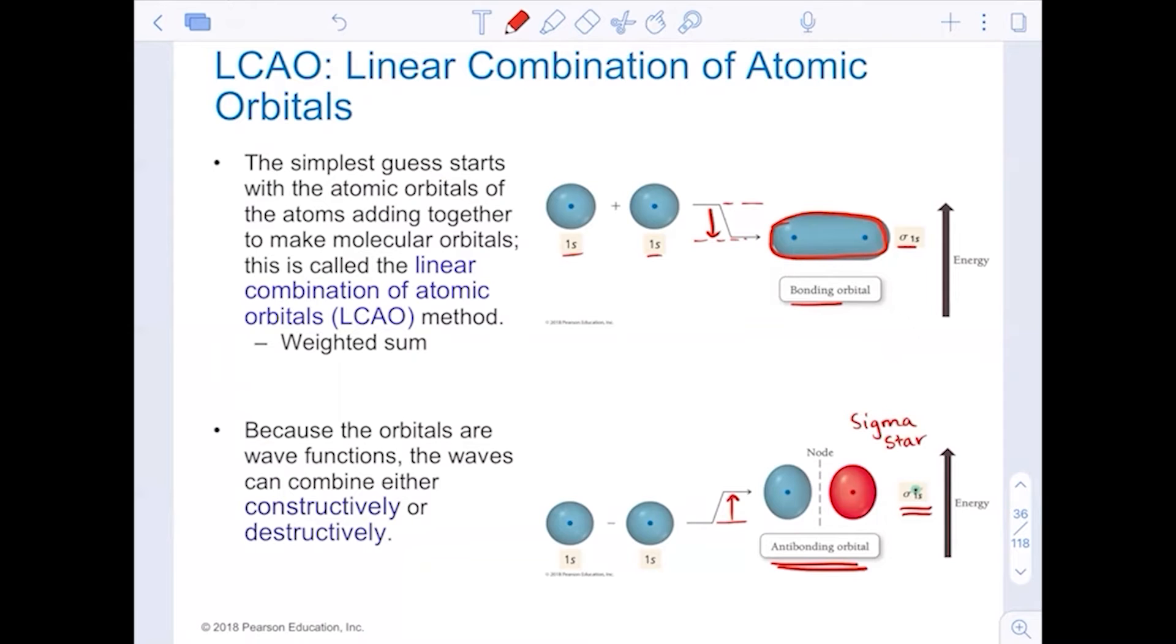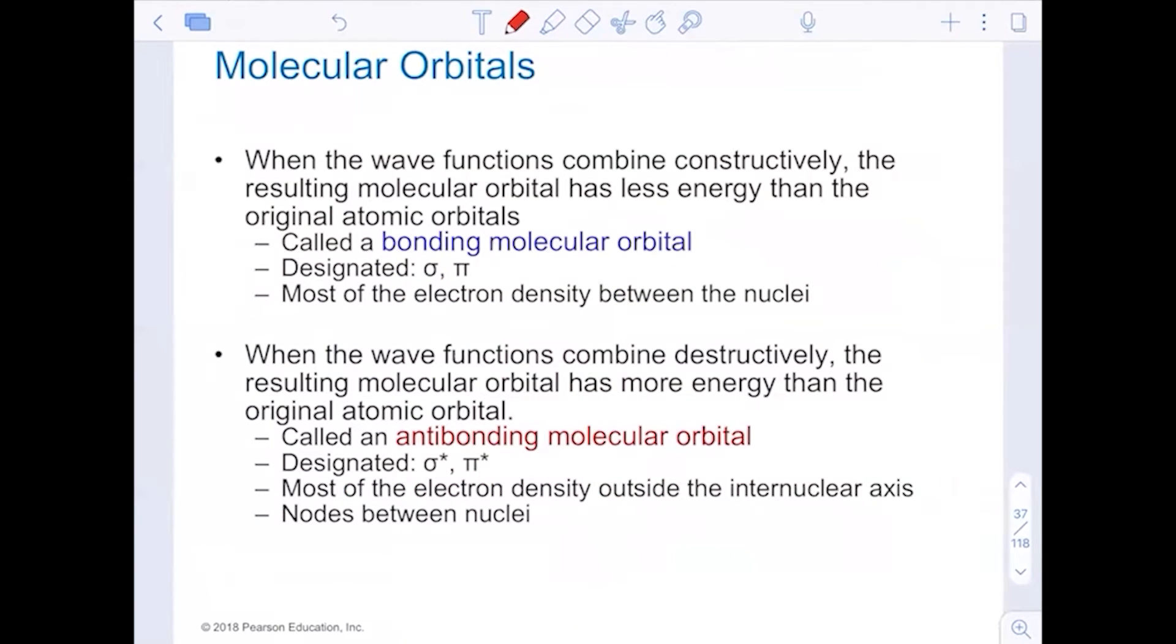When we think about these two options, constructive and destructive, we get into the idea of molecular orbitals. When the wave functions combine constructively in phase, they result in a molecular orbital that has less energy than the original atomic orbital. We designate these sigma or pi. That's what we just described and we talked about and we mapped out in valence bond theory. Most of the electron density is held between the nuclei in those types of bonds.